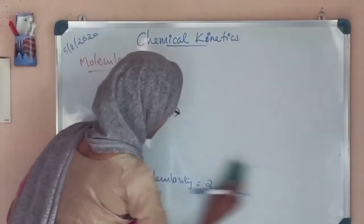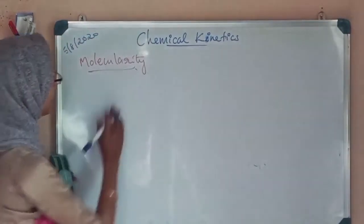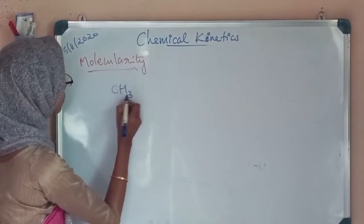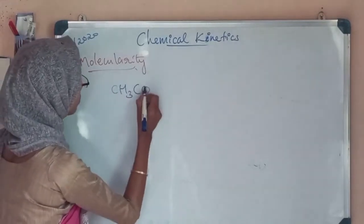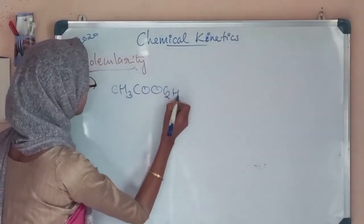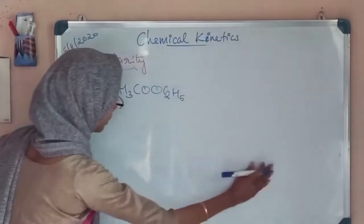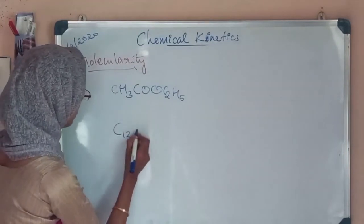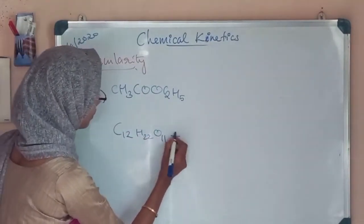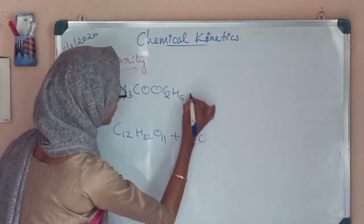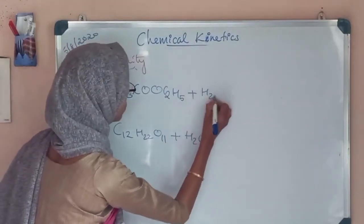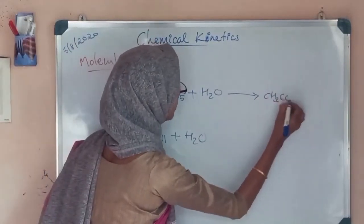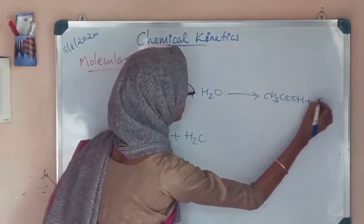Now consider another simple reaction: the acid hydrolysis of cane sugar (sucrose), C12H22O11. Here it is also a hydrolysis reaction, and the products include acetic acid CH3COOH plus ethanol.